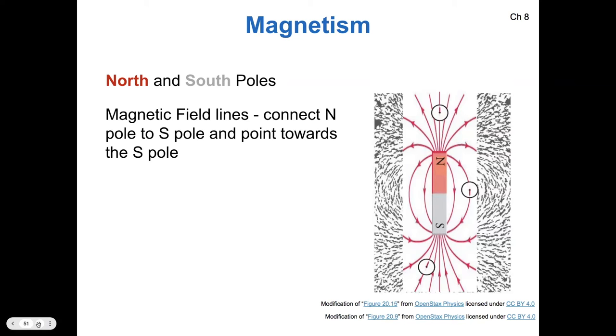So if I put a compass around the bar magnet in these different locations, the north pole of the magnet points along the magnetic field lines. So it's always pointing toward the south magnetic pole.